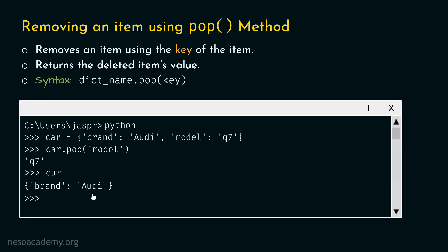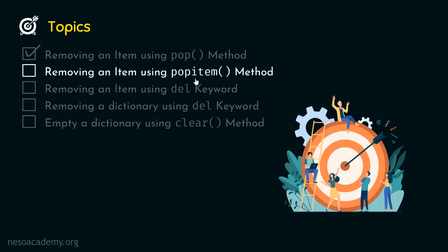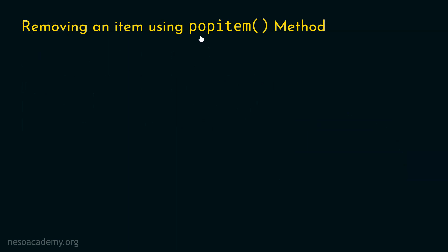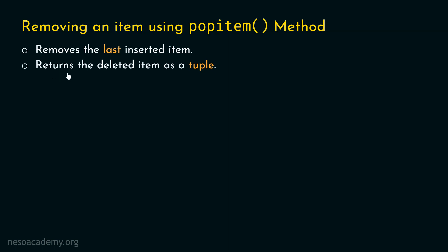As we have understood how to remove an item using the pop method, let's move on to the next topic: removing an item using the popitem method. We can use popitem to remove an item from the dictionary. The difference between pop and popitem is that popitem removes the last inserted item, so it does not require any argument within the round brackets. It also returns the deleted item as a tuple — meaning it returns the entire item, not just the value.